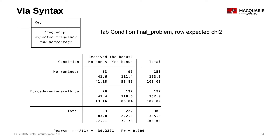This is what we get when we run that command. It looks a little different from correlations or t-test output — we get just one small piece of information at the bottom. The Pearson's chi-square is reported with degrees of freedom in parentheses, followed by the chi-square value. PR stands for probability, which is our p-value. Remember that p-values can never actually equal zero — it's just rounded to three decimal places here, representing a very, very small number.